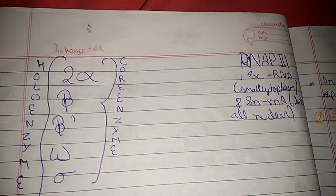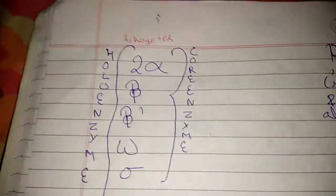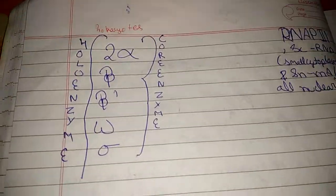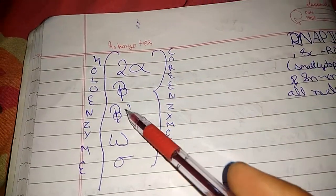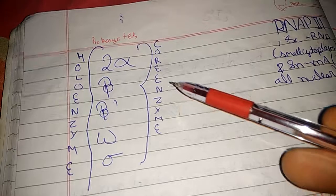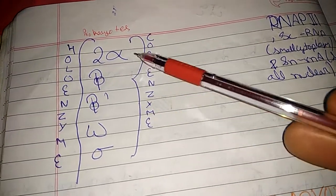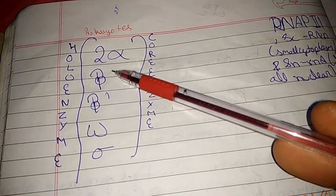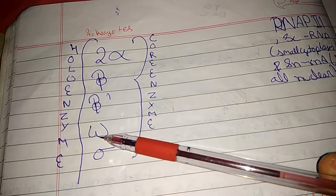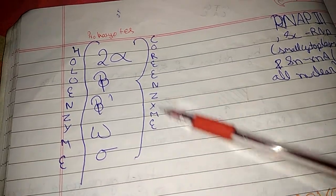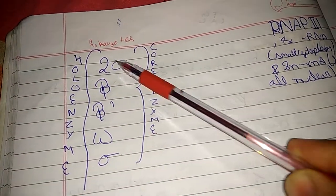Small nuclear RNA and the six subunits are 2 alpha, beta, beta dash, gamma, sigma. These are prokaryote subunits. So 2 alpha, beta, beta, omega, except sigma, called core enzyme, and all these subunits are called holoenzyme.